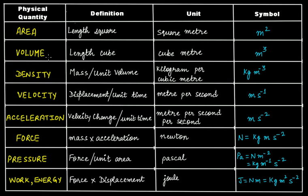Similarly, this is another physical quantity — volume. We know that if we try to find out the volume of a cube, a cuboid, or any solid shape, then it always comes as either meter cubed or centimeter cubed. The symbol is m³.